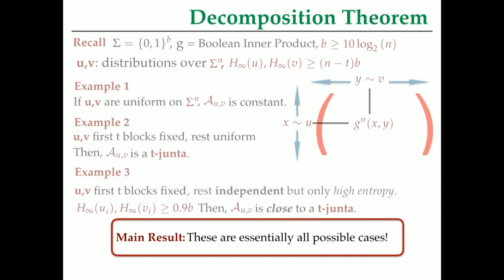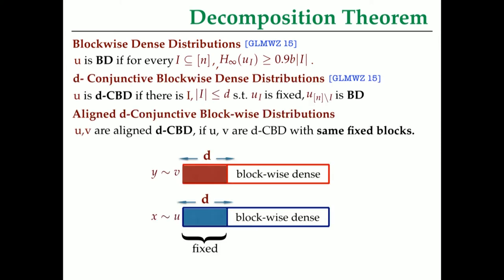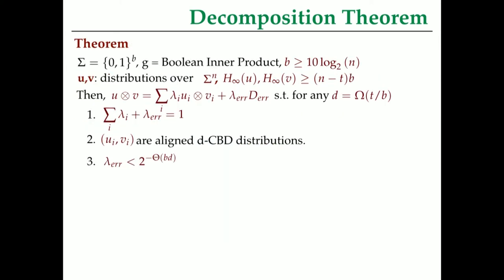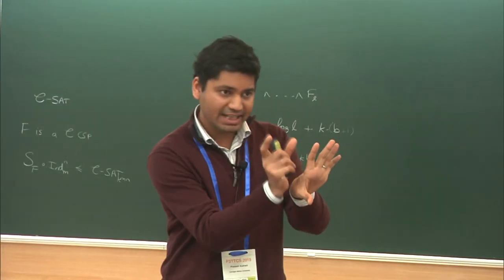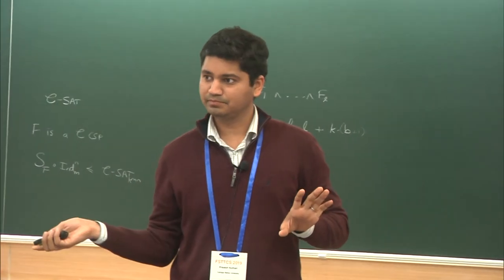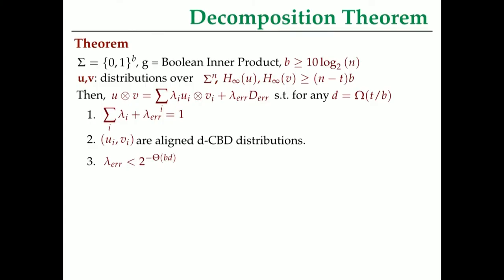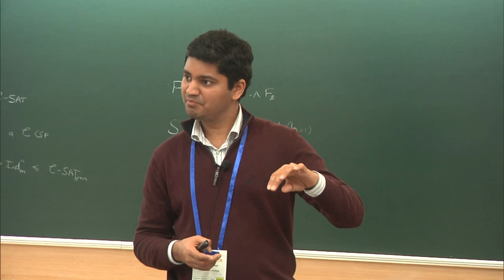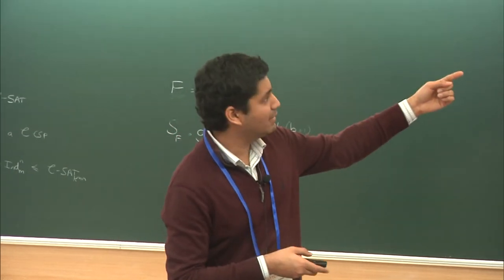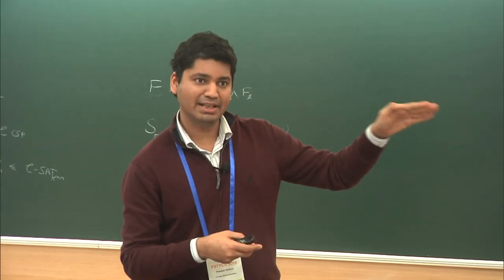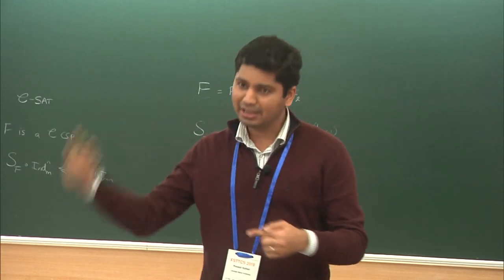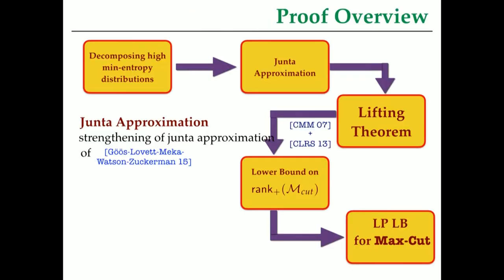The main result we prove here is that this is actually true in general: if U and V correspond to high min-entropy distributions — meaning they look like large rectangles — then the product distribution UV can be decomposed into things which look like T bits fixed and then uniform on the rest, plus some tiny error term. Basically we represent A_{UV} as approximate T-juntas, and it turns out that if M_f has a low non-negative rank decomposition, you can use this simplicity of A_{UV} — that it's approximated by a T-junta — to actually construct an approximator which is a conical combination of T-juntas for the function F.